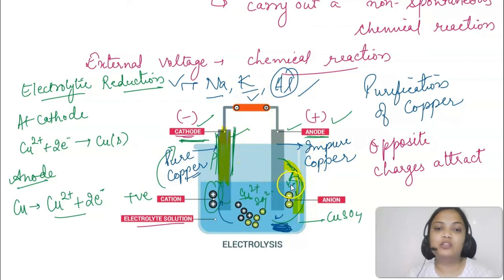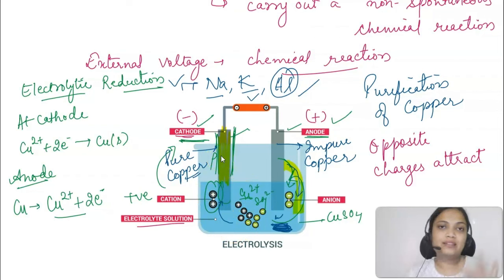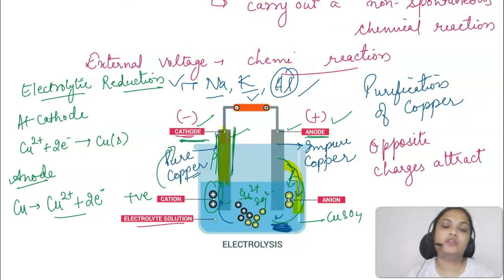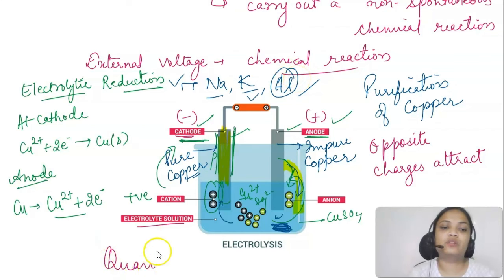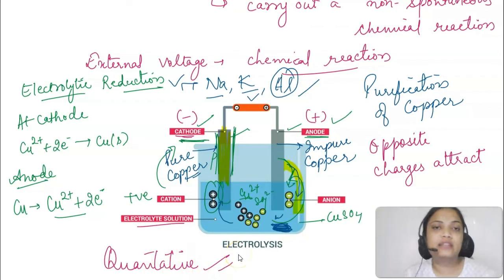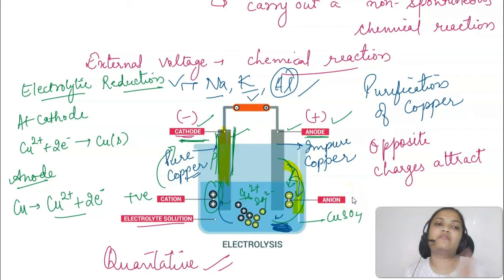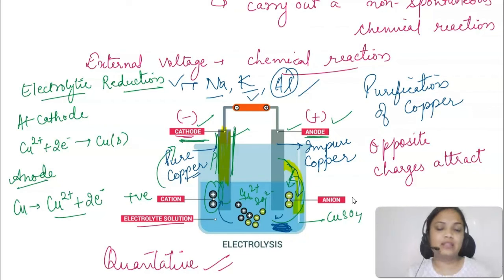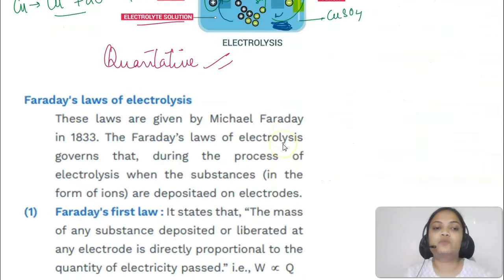When current passes, the movement of ions starts — the metal from the anode dissolves into the electrolyte and ions from the electrolyte get deposited at the cathode. To give a quantitative treatment of electrolysis, we have two laws given by Faraday. These laws help us determine how much electricity is required for a certain amount of electrolyte — this knowledge is important to carry out these processes.